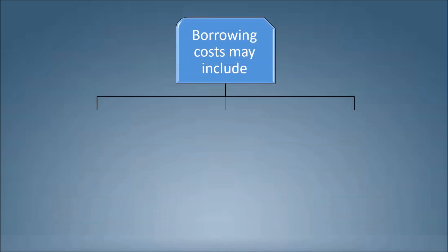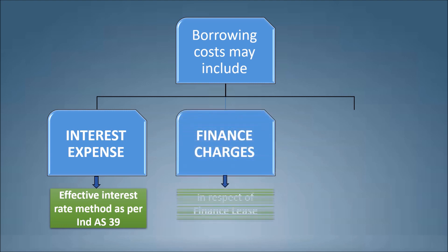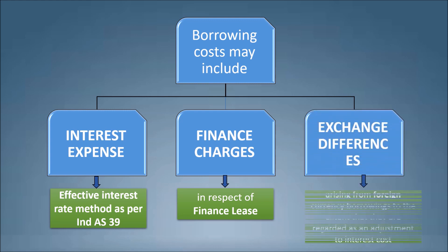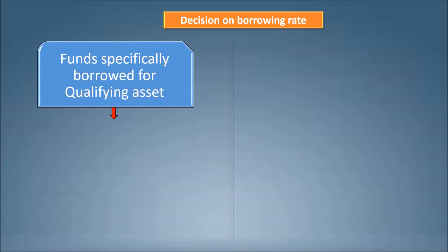Borrowing costs may include: interest expense calculated as per the effective interest rate method as per IND AS 39; finance charges in respect of a finance lease; and exchange differences arising from foreign currency borrowings to the extent that they are regarded as an adjustment to interest costs. The decision on the borrowing rate depends on the type of borrowing.